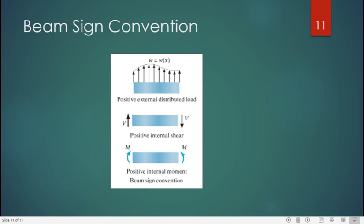Beam sign convention. These are very important and you should know very well when we will cover slope and deflection of beams. We will often use these sign conventions. Positive external loading if it is applied upward is positive. And positive internal shear stress: if left side of the beam section is upward it is positive, and right side if it is downward it is positive. And positive internal moment: if it is clockwise at left side it is positive, and if it is anticlockwise at right side it is positive.